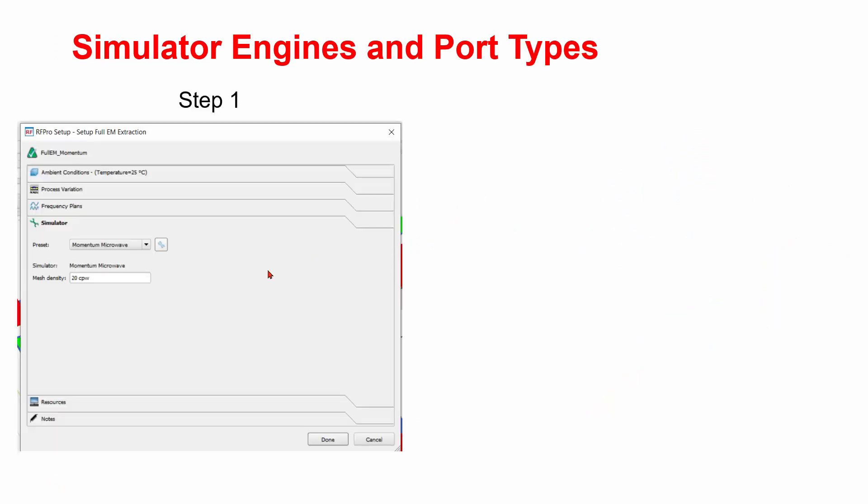In Arfa Pro, to set up a port, there are two steps. First, you need to specify which simulation engine you want to use. Under the simulator, you are able to choose Momentum Microwave, Momentum RF, or FEM.